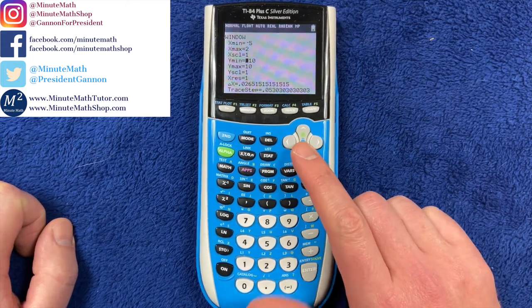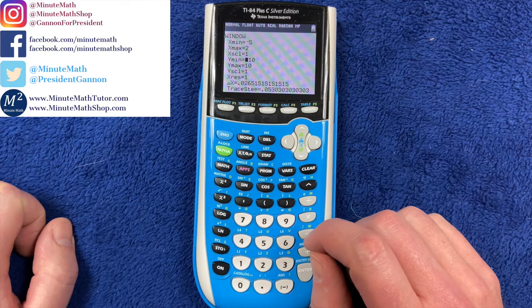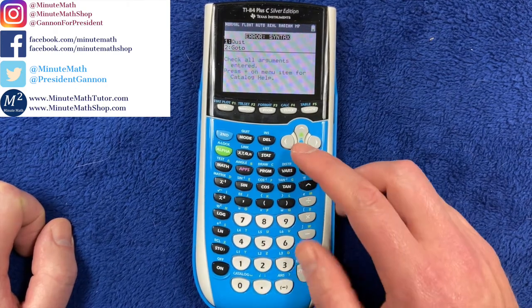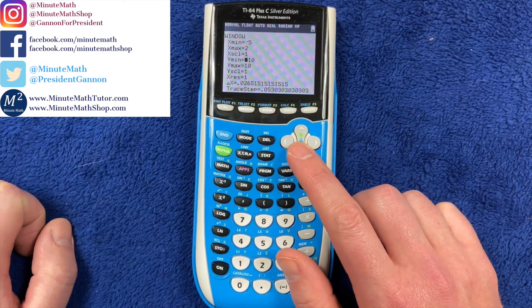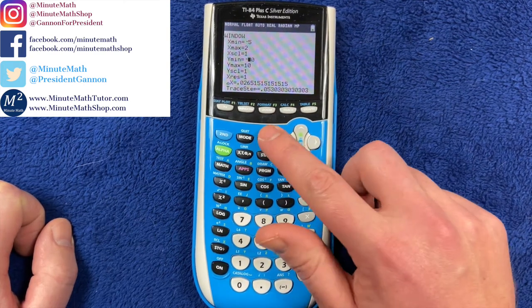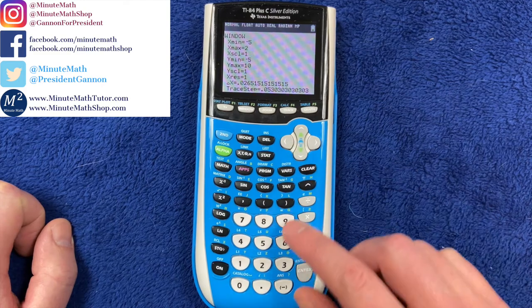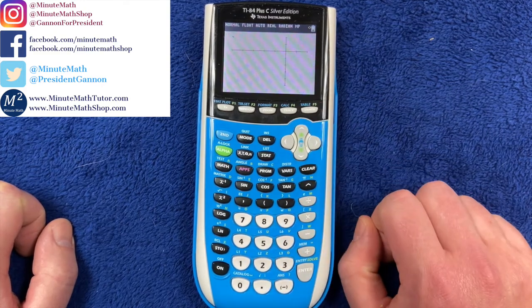Y minimum, we're going to decrease that to be negative 5, and y max, y minimum negative 5, and y max positive 2. And if we graph that there.